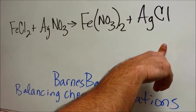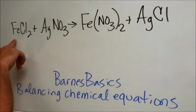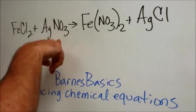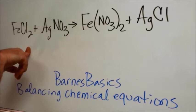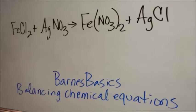This is basically an exchange reaction because the iron is picking up the nitrate and the silver is picking up the chlorine. Let's balance all these individual formulas first before we balance the equation.